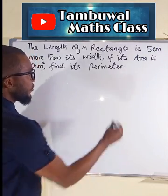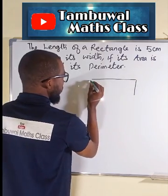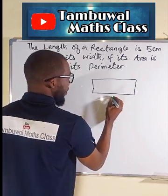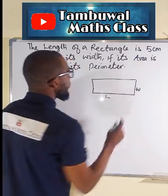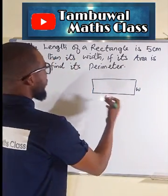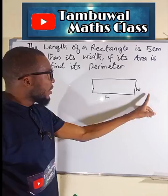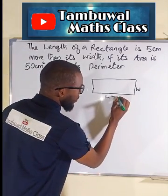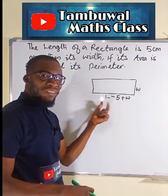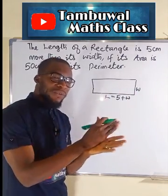First of all, let us form a sketch. This is a rectangle. Here is the length while here is the width. From the question, you can see none of the sides were given because it only stated that the length is 5 cm more than the width. So we can say the length is 5 cm plus the width, because whatever the width is plus 5 cm will give us the length.